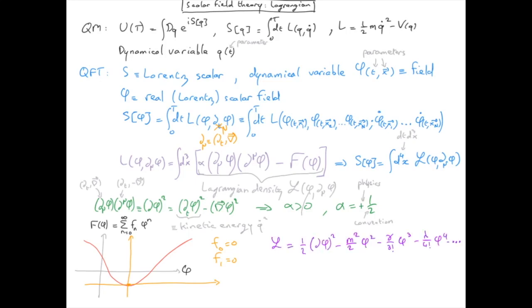The way I wrote the constant in front of φ squared, φ³, and φ⁴, etc., is just a convention. Also we will see that the term m here will correspond to a mass later on. So far this is just a constant. So is γ and so is λ.